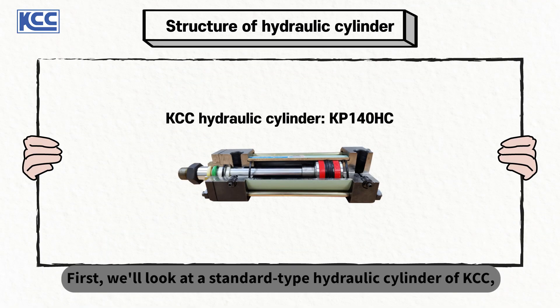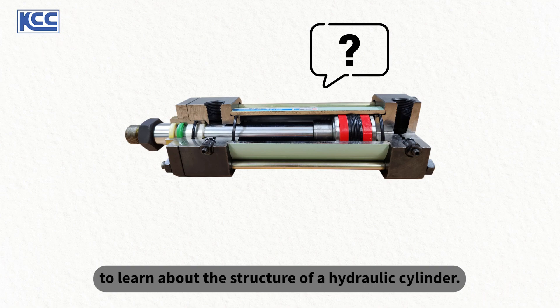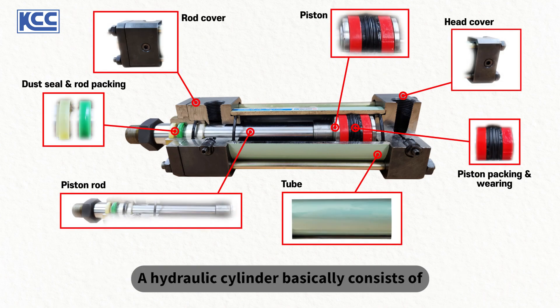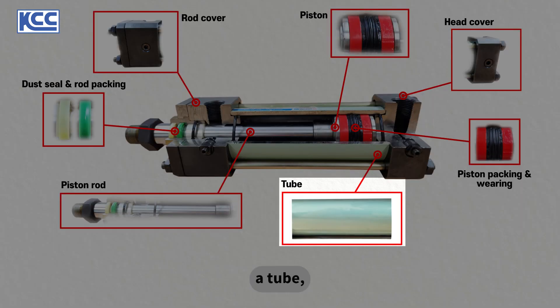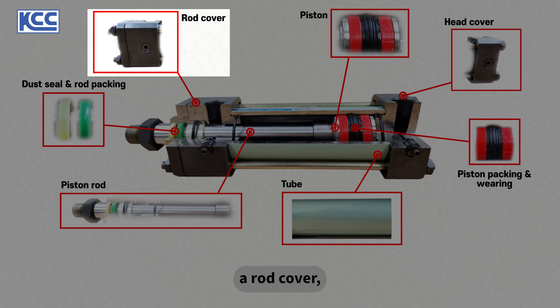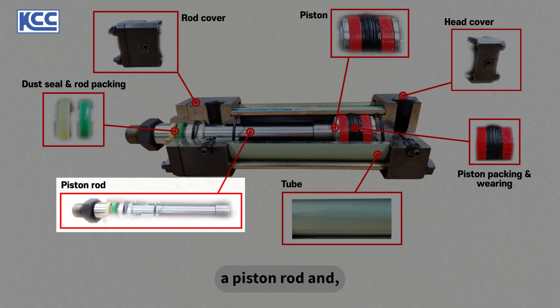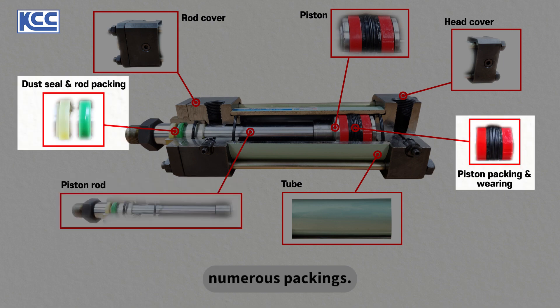First, we'll look at a standard type hydraulic cylinder of KCC, which is called KP140HC, and examine its inside to learn about the structure of a hydraulic cylinder. A hydraulic cylinder basically consists of a tube, a head cover, a rod cover, a piston, a piston rod, and numerous packings.